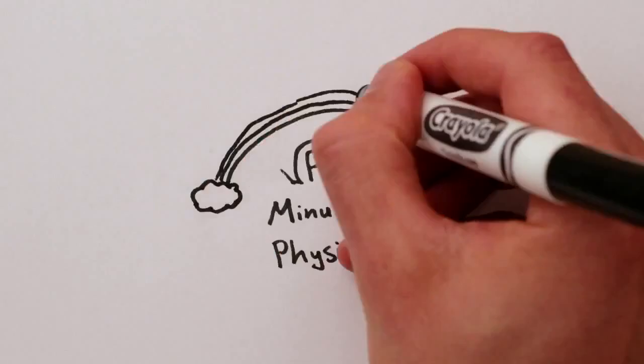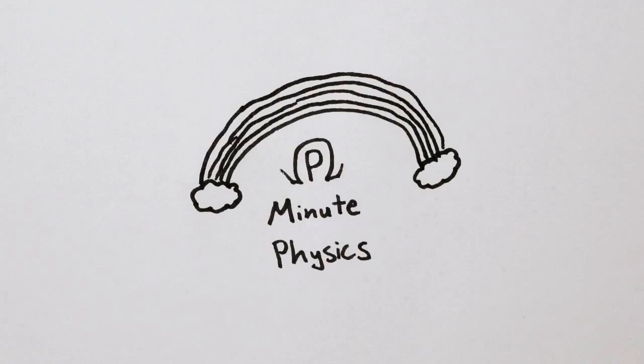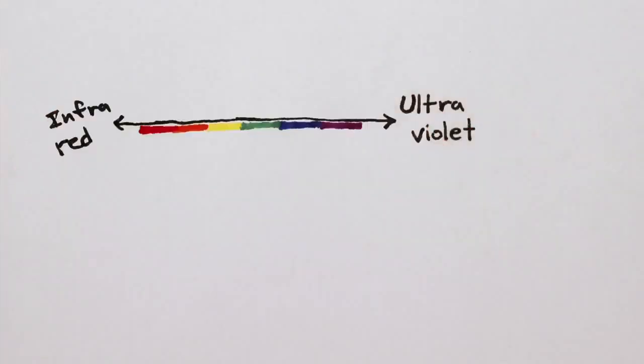We've all been told that the colors of the rainbow correspond to different wavelengths of visible light. Red, orange, yellow, green, blue, and violet.